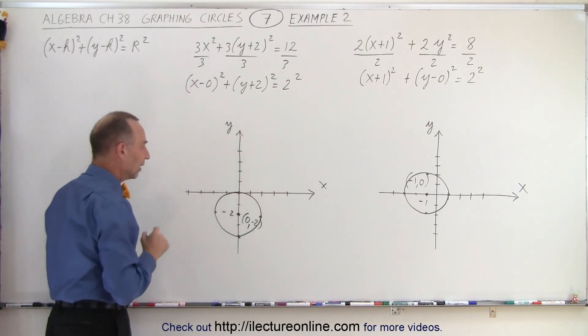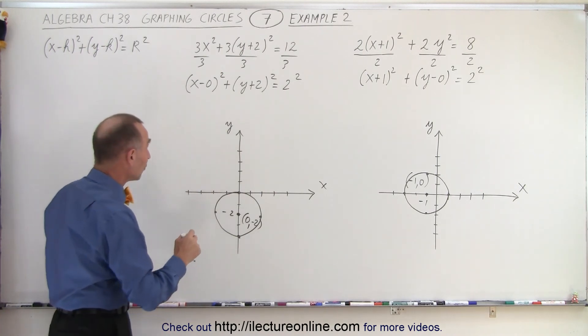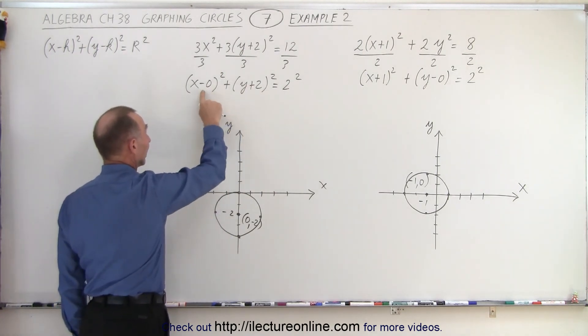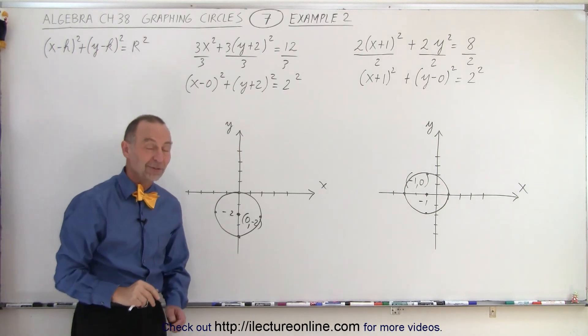Like so, and there's the circle again with the same radius but shifted in a different direction, down 2 and 0 in the x direction. And that is how it's done.